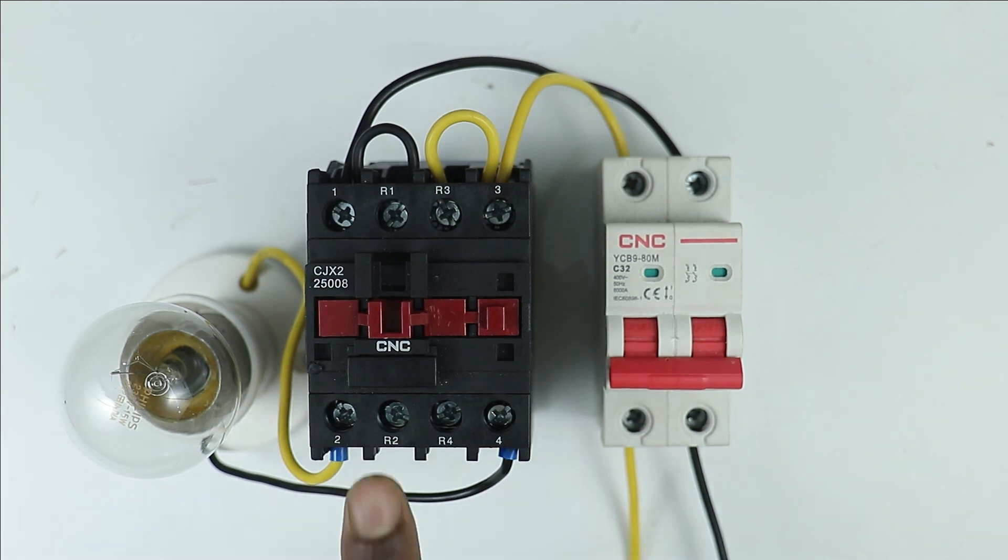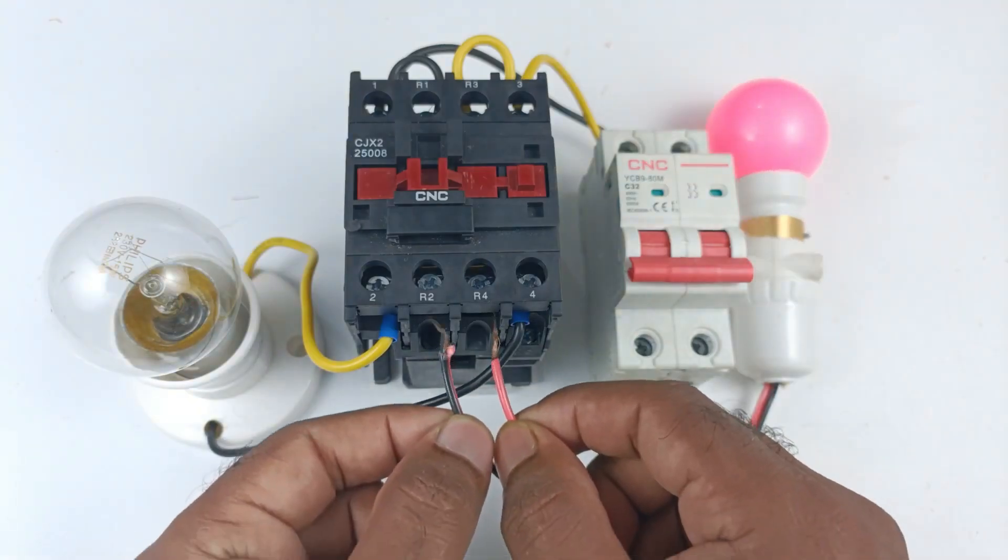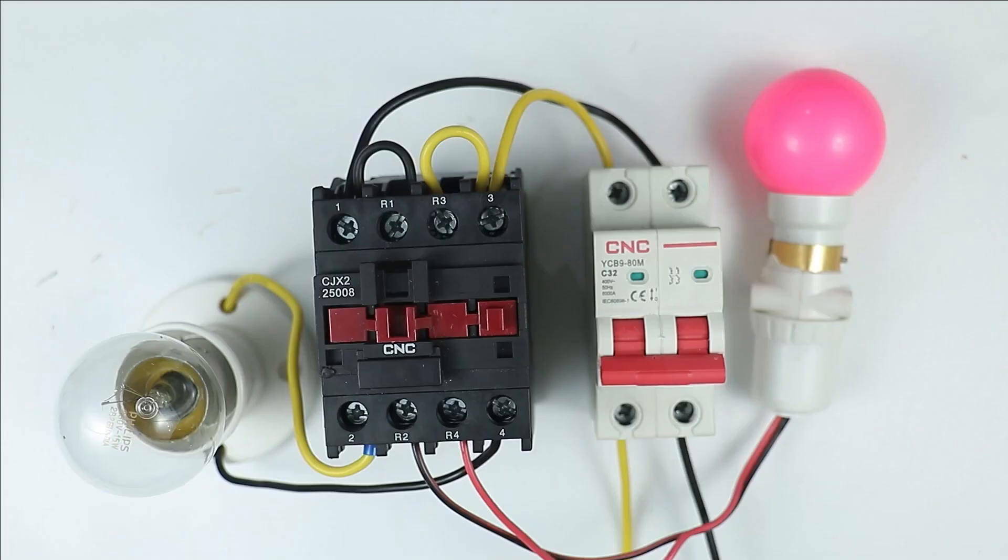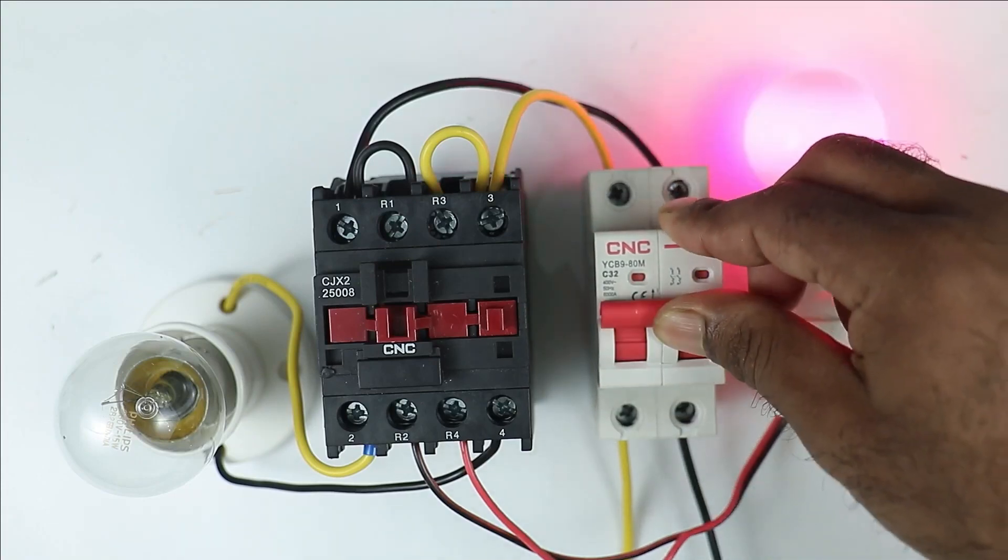After this, at NC contact of contactor, connect this night lamp with NC contact. Here, what is the benefit of using NO and NC contact, let's clear this concept first.